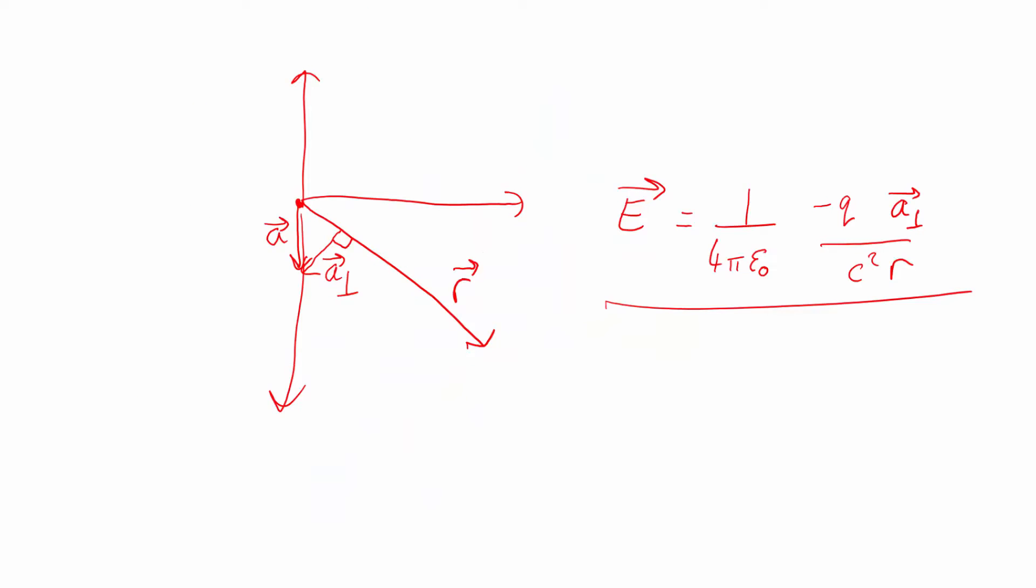The other thing you can see is that the electric field is always at right angles to the motion. So the waves always go out radially from whatever was accelerating, but the electric field is always at right angles. A perpendicular is always at right angles to the r vector.